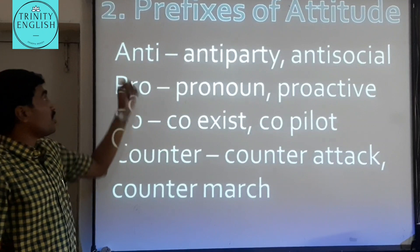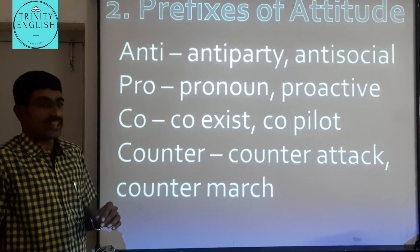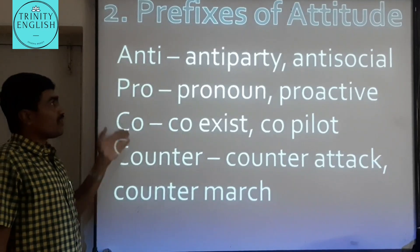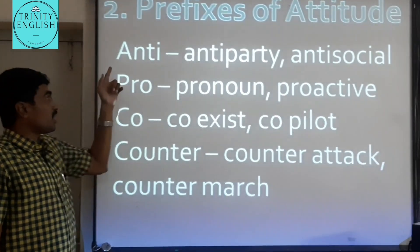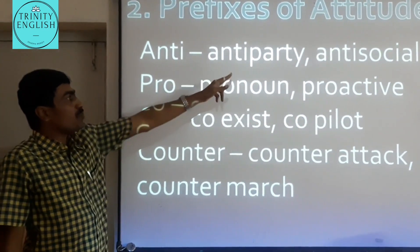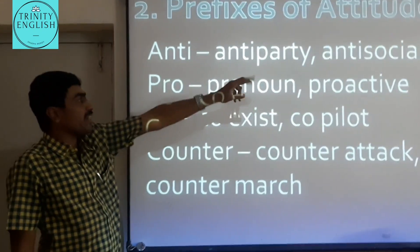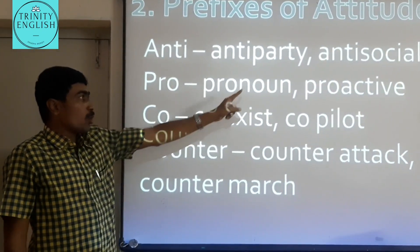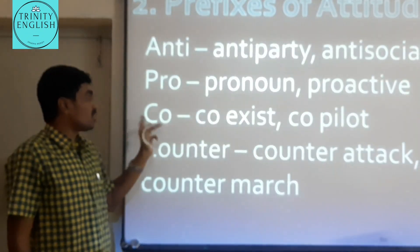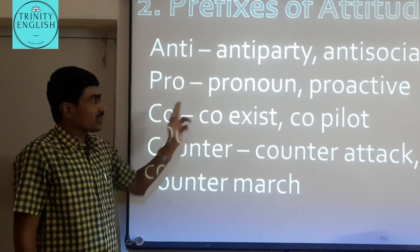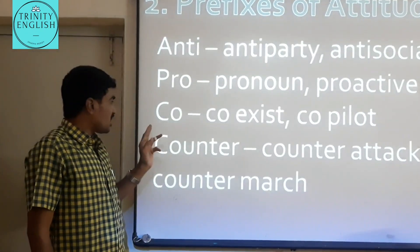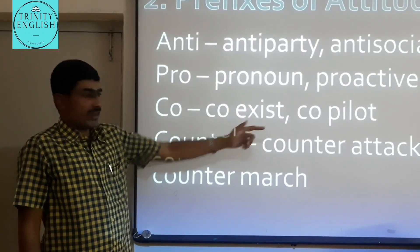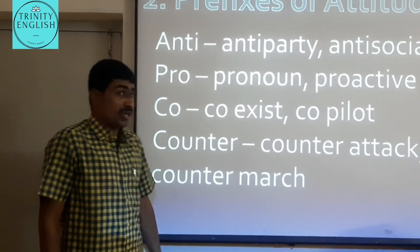Next are the prefixes of attitude. The first is 'anti-,' giving 'anti-party' and 'anti-social.' The second is 'pro-,' giving 'pronoun' and 'proactive.' The third is 'co-,' giving 'coexist' and 'co-pilot.' The fourth is 'counter-,' giving 'counter-march.'